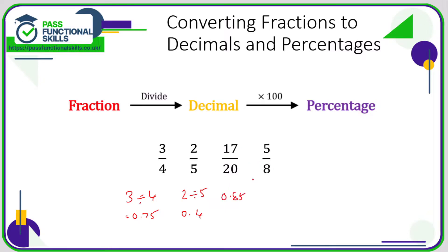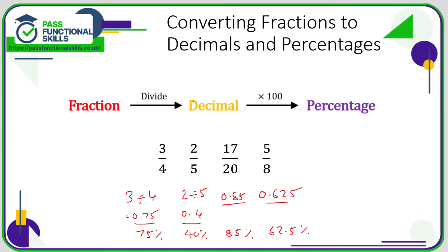To go from a decimal to a percentage, multiply the decimal by 100. So 0.75 × 100 = 75; 0.4 × 100 = 40; 0.85 × 100 = 85; 0.625 × 100 = 62.5%. Therefore, fraction to decimal is top divided by bottom, and decimal to percentage is multiply by 100. If going from fraction directly to percentage, just do top divided by bottom times 100 — for example, two fifths: two divided by five times 100 goes straight to 40.